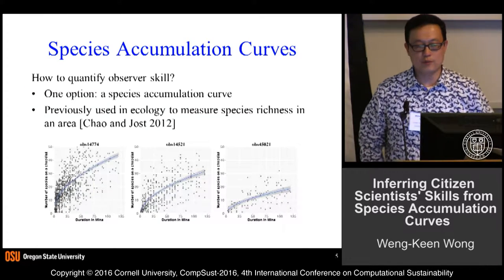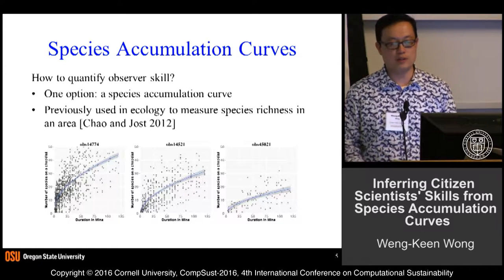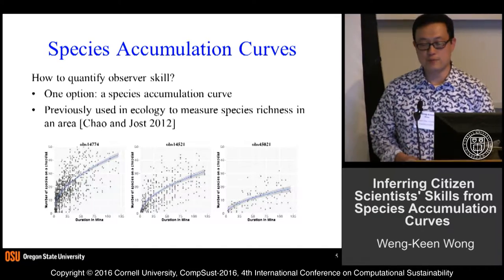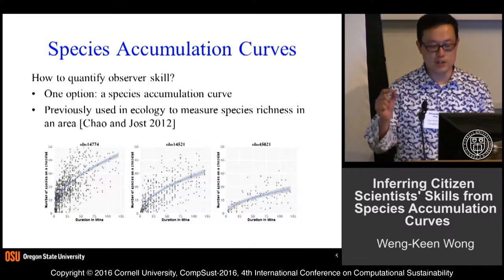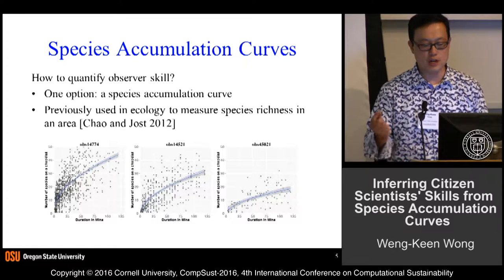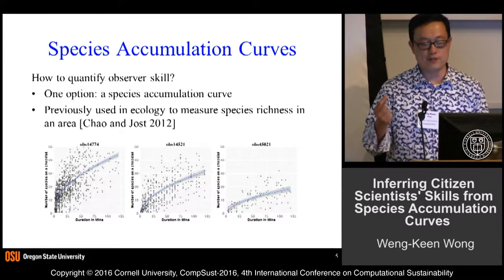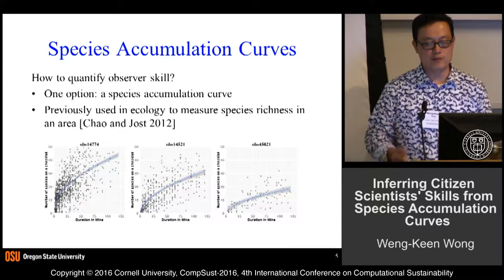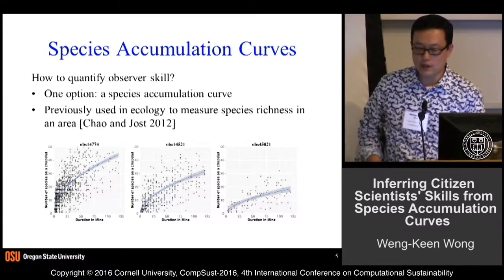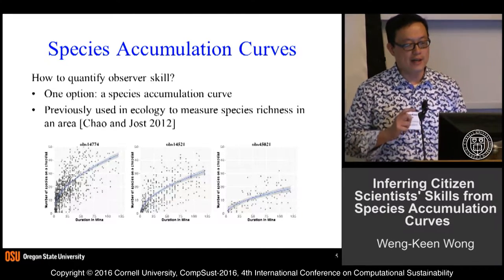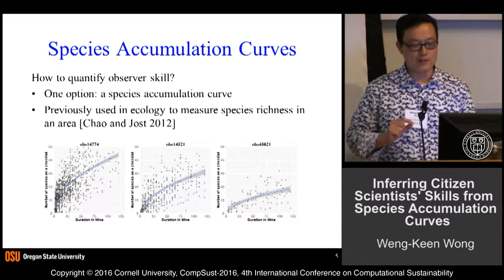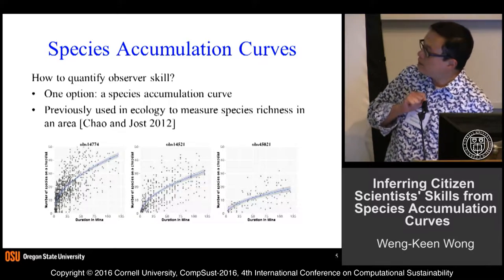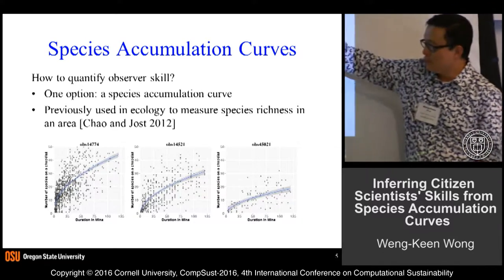The central hypothesis of our paper was trying to use species accumulation curves to quantify observer skill. Previously, these curves were used to measure species richness. Each dot on these graphs corresponds to an eBird checklist, with associated duration in minutes and number of species. The far left graph belongs to an expert like Chris Wood who really knows his stuff, while the far right graph belongs to a novice — it's very, very shallow, as you can see.